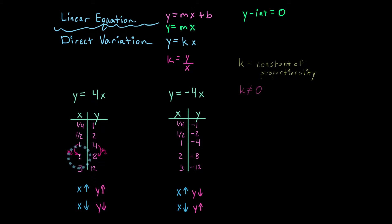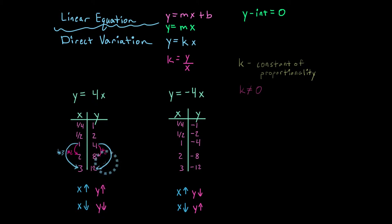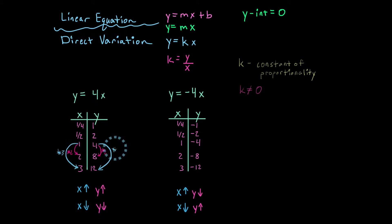I could ask how I got from 2 to 3, but I'm going to keep it simple and ask how I got from 1 to 3. Well, I had to scale up by 3 over here. And how did I get from 4 to 12? I had to multiply by 3 on this side as well. So I'm scaling up by the same values.